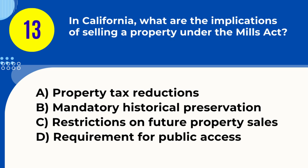Question 13. In California, what are the implications of selling a property under the Mills Act? A. Property tax reductions B. Mandatory historical preservation C. Restrictions on future property sales D. Requirement for public access. Answer: A. Property tax reductions. Explanation: The Mills Act provides property tax reductions for owners who preserve and maintain historical properties.